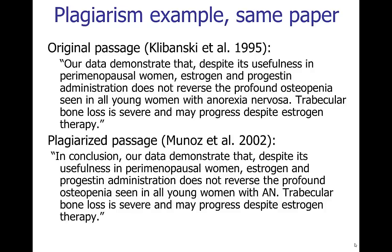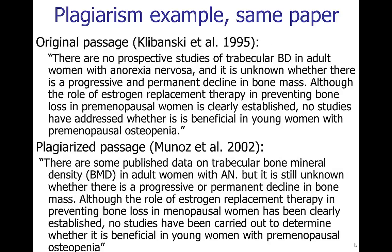After I saw those two paragraphs almost matched exactly, I compared the two papers side by side and found the 2002 paper was almost a complete copy of the 1995 paper. Here are a few more examples: in the 1995 paper the concluding sentence reads, 'Our data demonstrate that despite its usefulness in perimenopausal women, estrogen and progestin administration does not reverse the profound osteopenia seen in all young women with anorexia nervosa.' The plagiarized 2002 paper is almost identical — they only changed 'anorexia nervosa' to its acronym 'AN.' It's a pretty clear case of straight plagiarism.